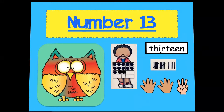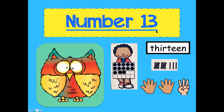Number 13 — just like 10, 11, and 12, 13 is a two-digit number. Say 13. It's spelled t-h-i-r-t-e-e-n. Notice the little boy is holding a full 10-frame, because the number one represents 10. A 10-frame has 10 little frames, and then the little three represents the three little extras.